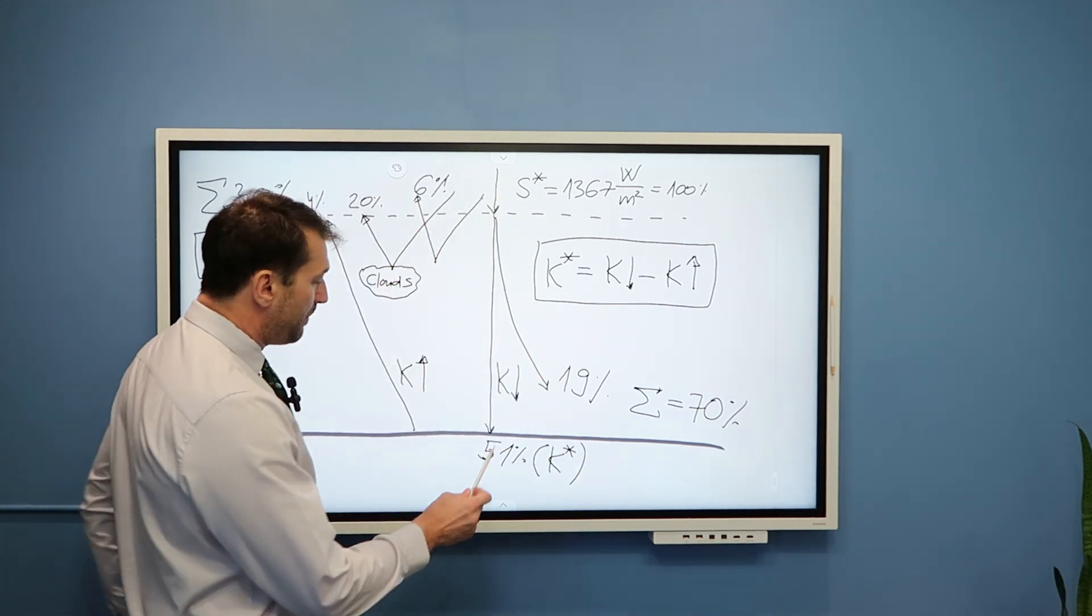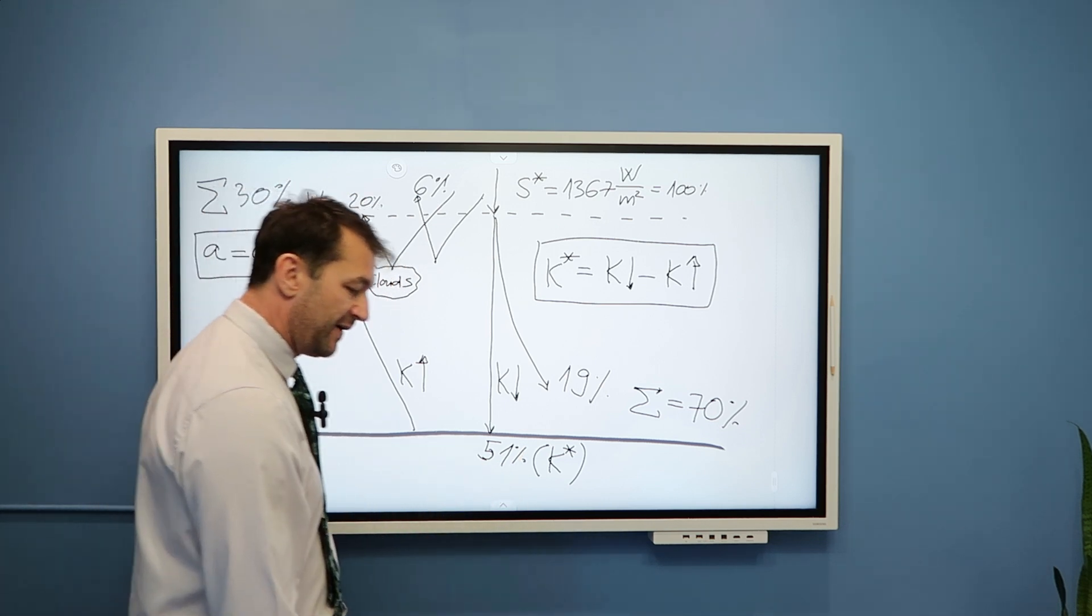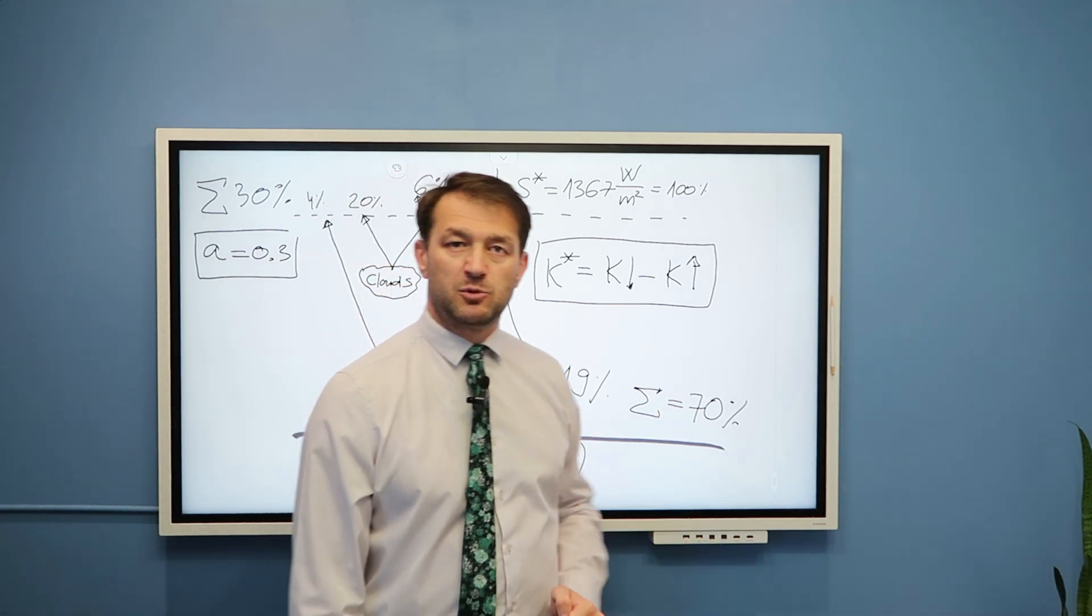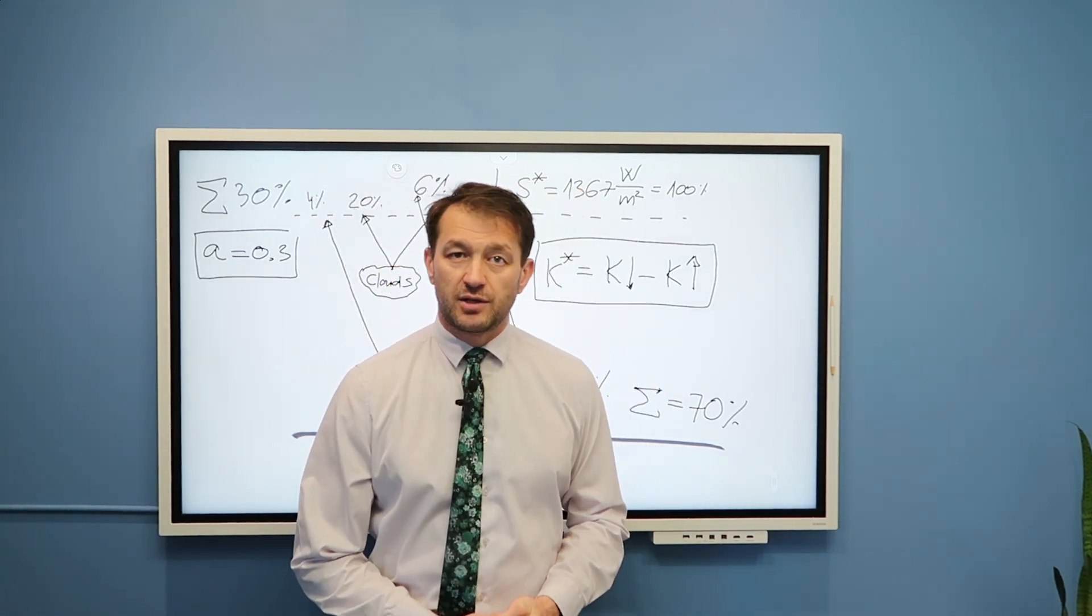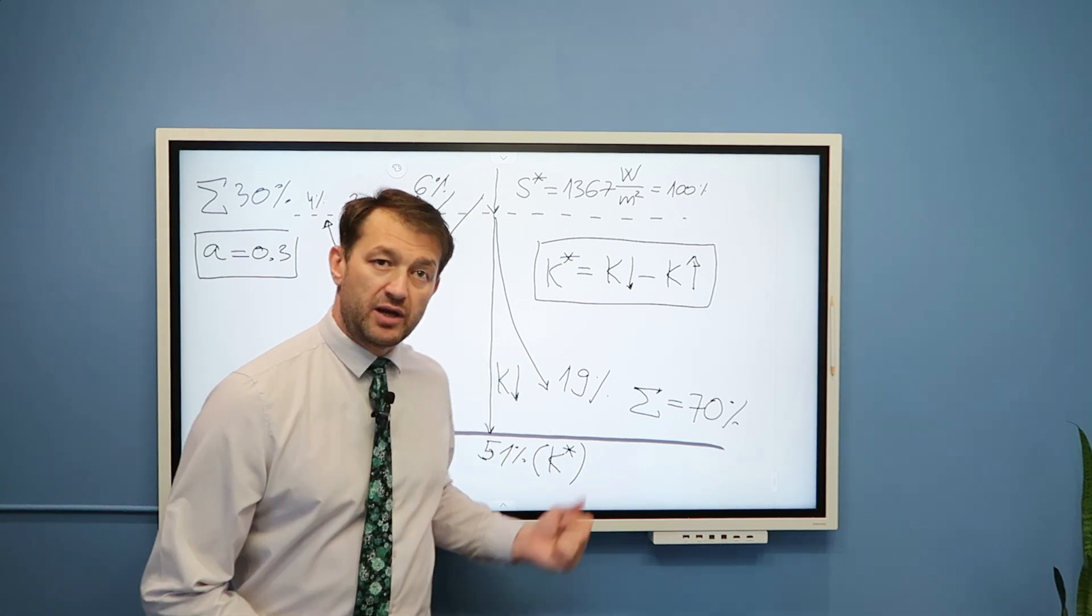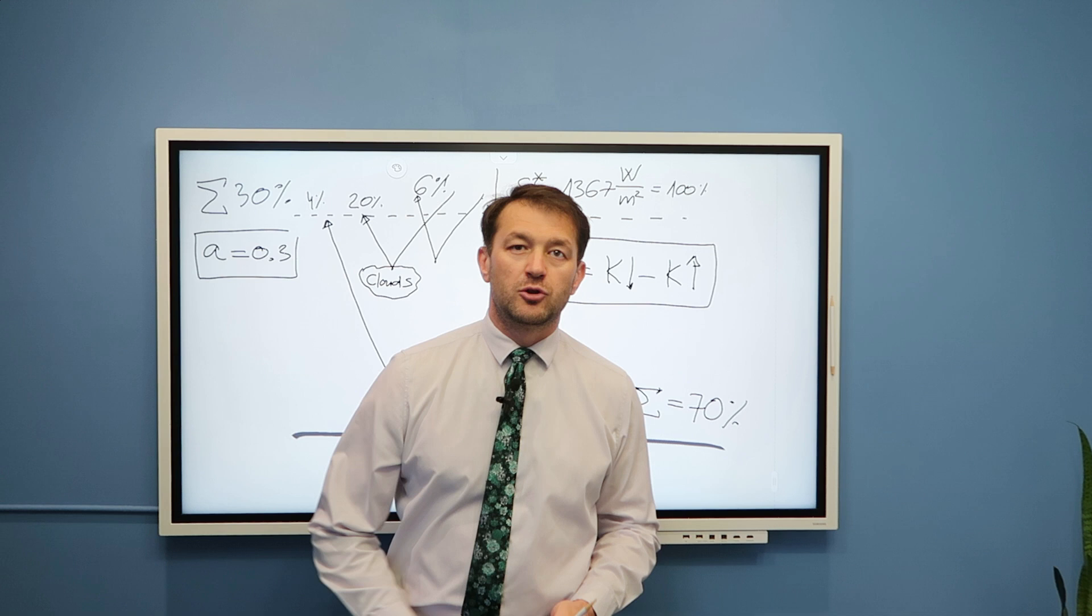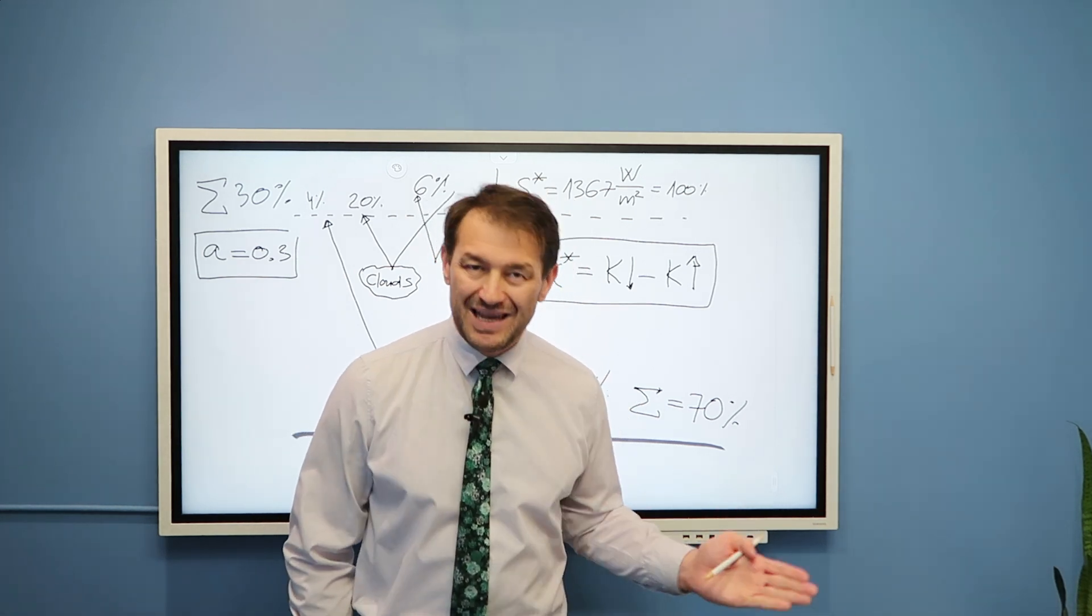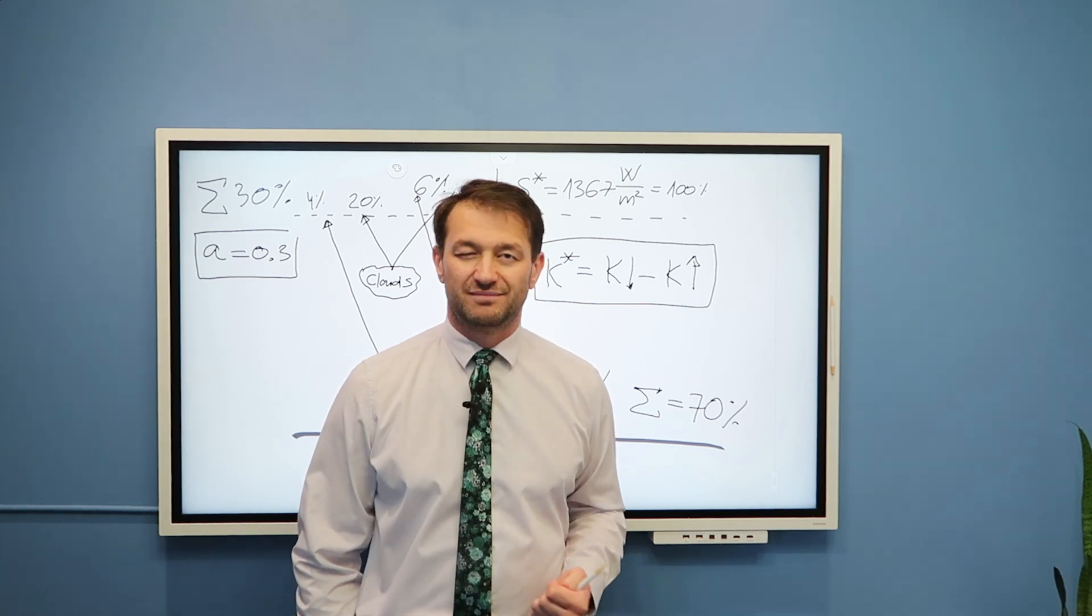Now, what is happening with this 51% of radiation that reaches the surface? Some of it warms the atmosphere through convection, some of it through conduction, some of it is used to evaporate water, and some of it is returned to the atmosphere through long wave, or infrared radiation. But that is what we will discuss in the next video. Until then, goodbye.